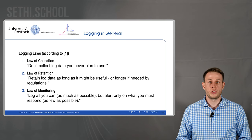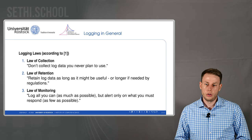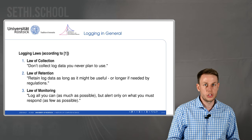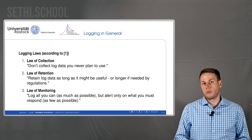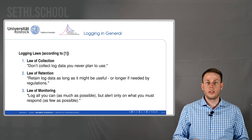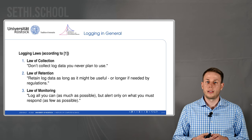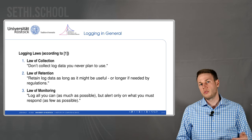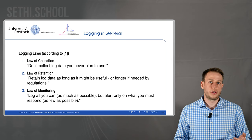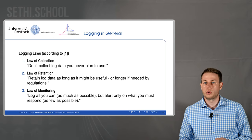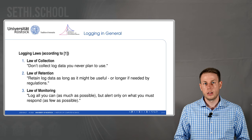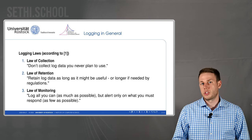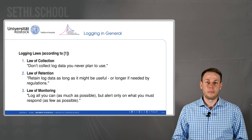The second law is the law of retention: retain log data as long as it might be useful, or longer if required by regulations. A difficult question is how long you'll need the messages collected. Log files from a web server can grow enormous very fast, so you need a strategy — for example, after seven days only store error logs, and discard normal operation entries. Error logs might be kept for 30 or 45 days, while non-flagged normal entries are thrown away after seven days. Prioritization is an important part.